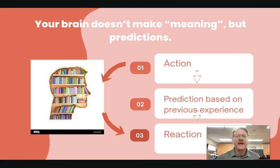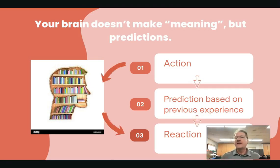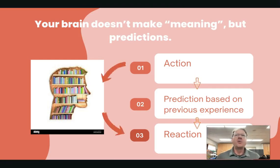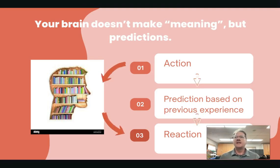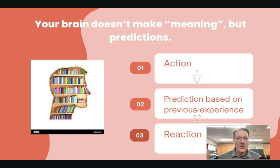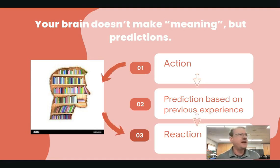It pretty much comes down to this: each time we experience something, our brain will make a prediction as to what is about to happen. It predicts the outcome based on our previous experience. Based on what we've experienced previously, our brain will give us a combination of neuromodulators, and we interpret that as feelings. So if a student has not had a good experience in math class, the brain predicts this is not going to go well and we need to protect ourselves.